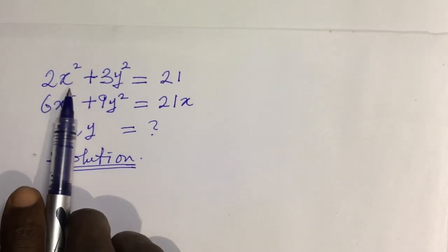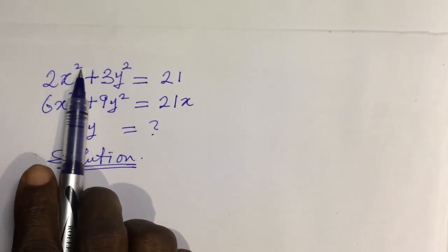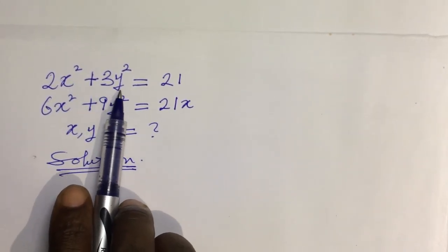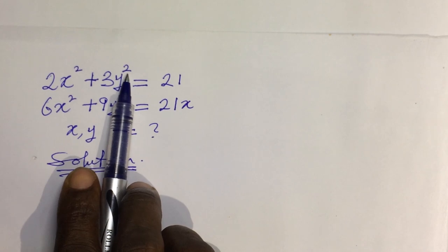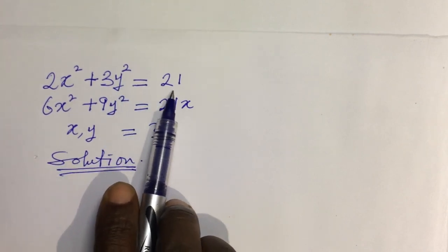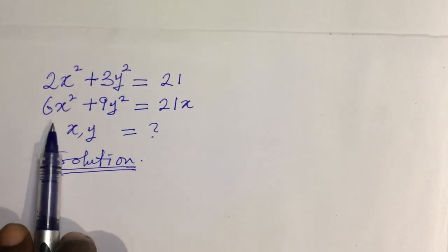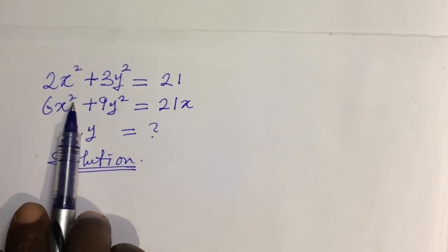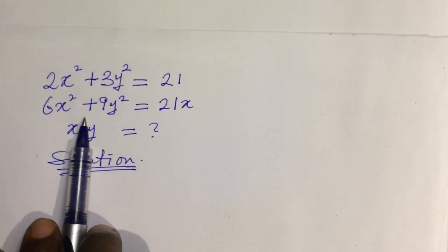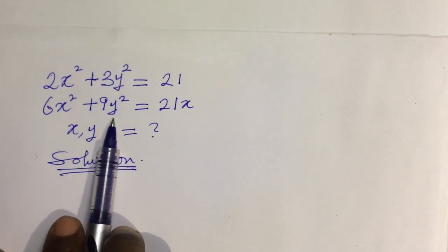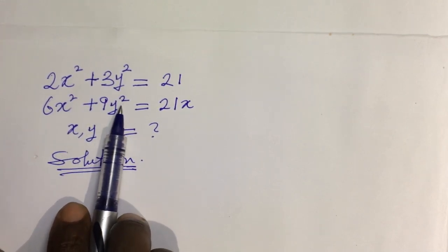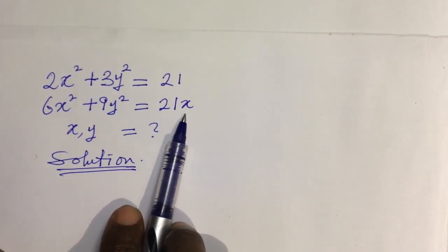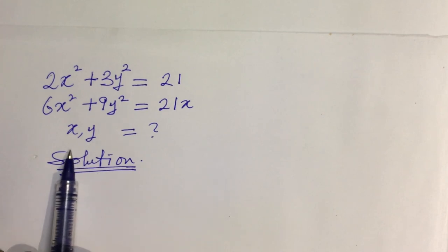The question reads: 2x² + 3y² = 21, and the second equation is 6x² + 9y² = 21x. What will be the values of x and y?